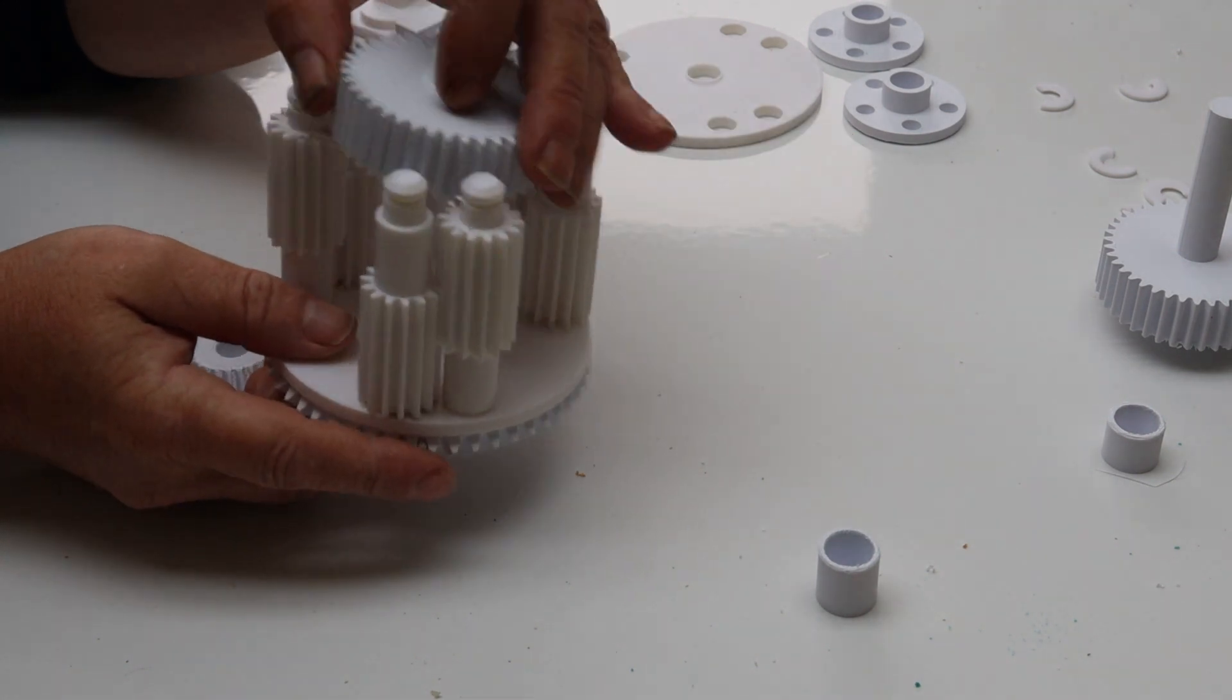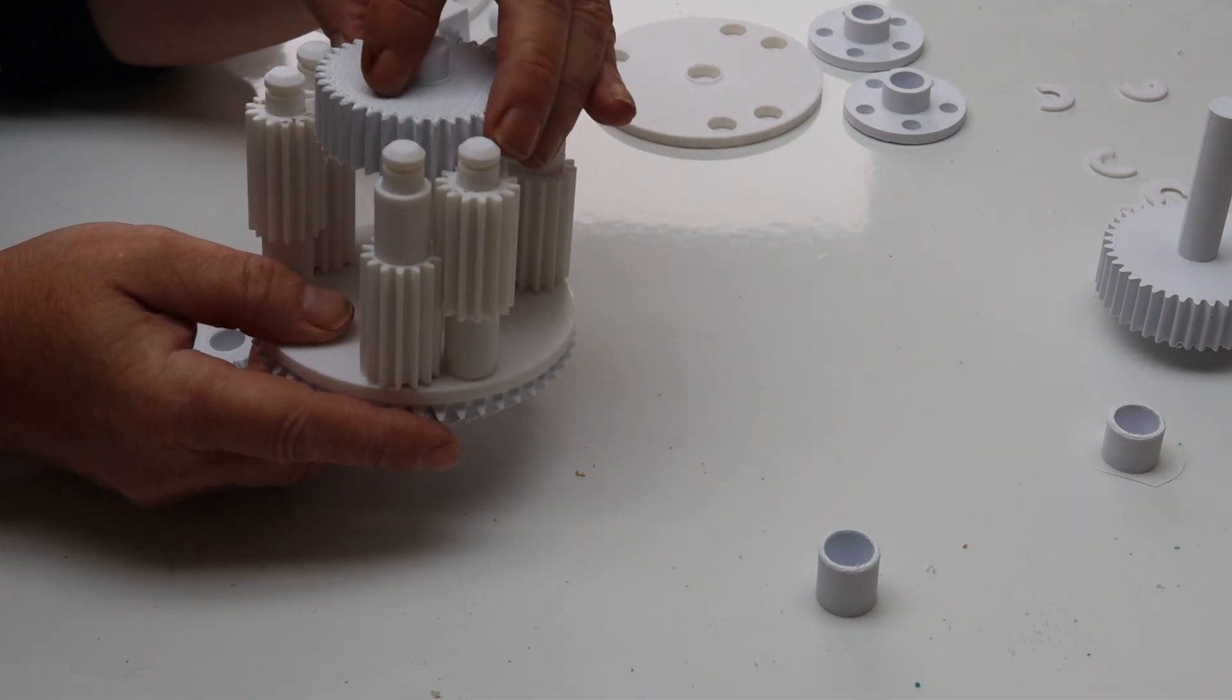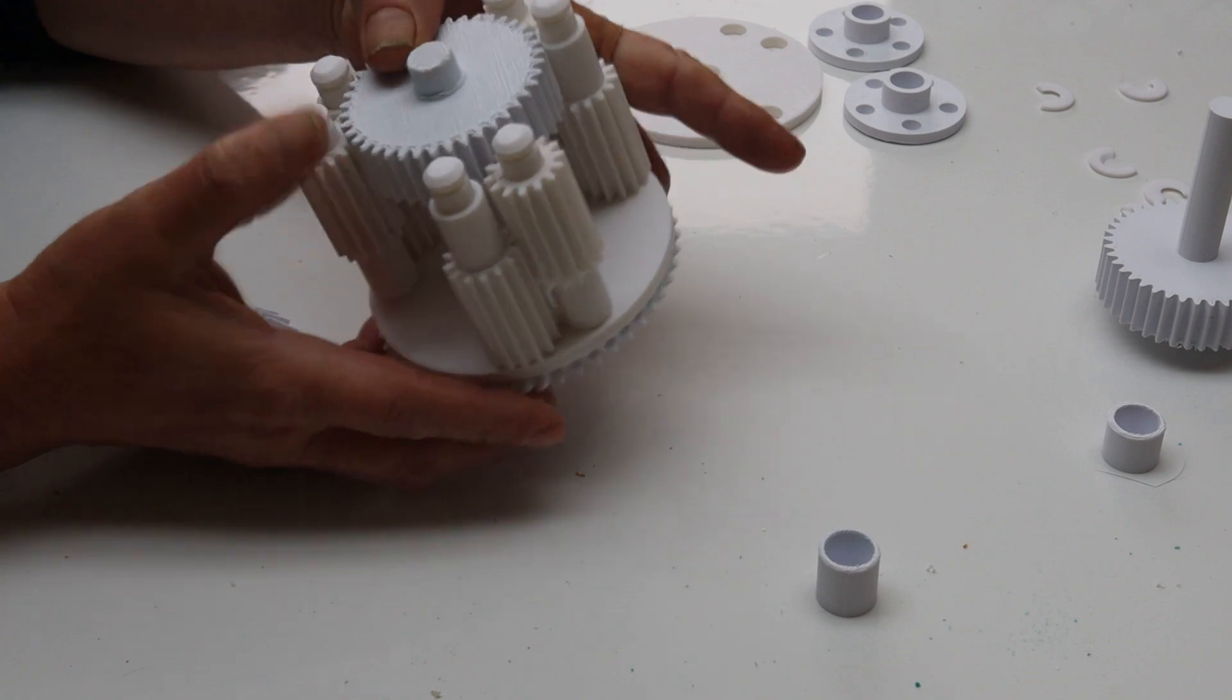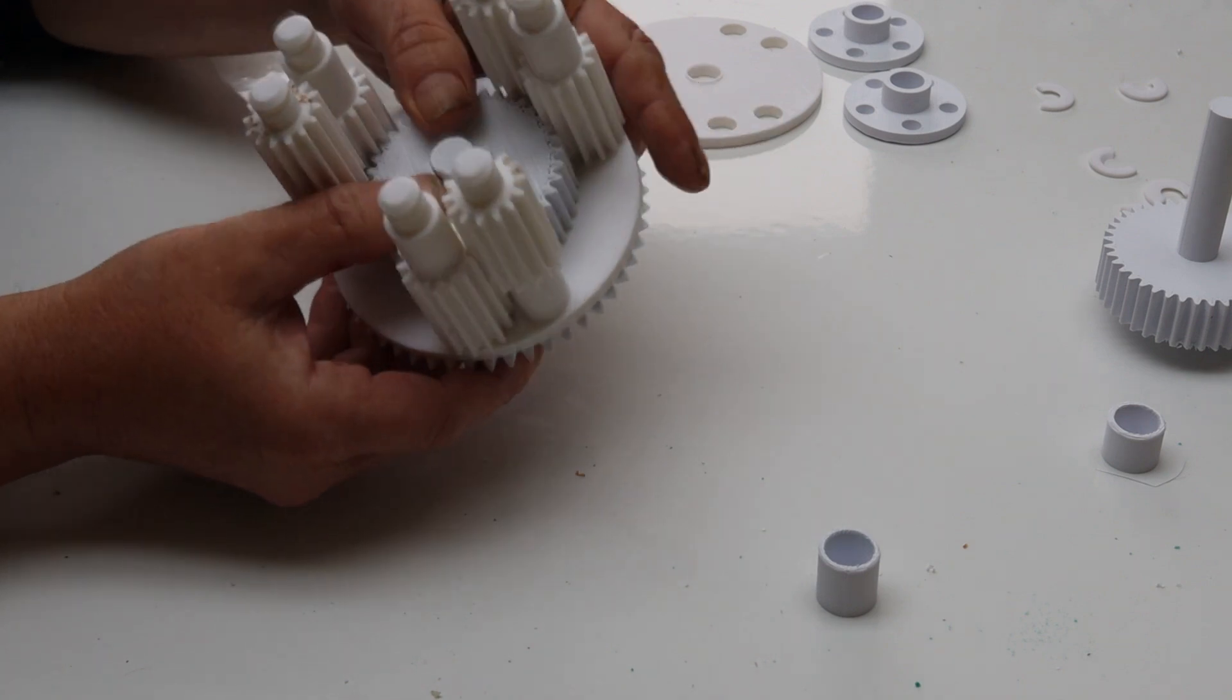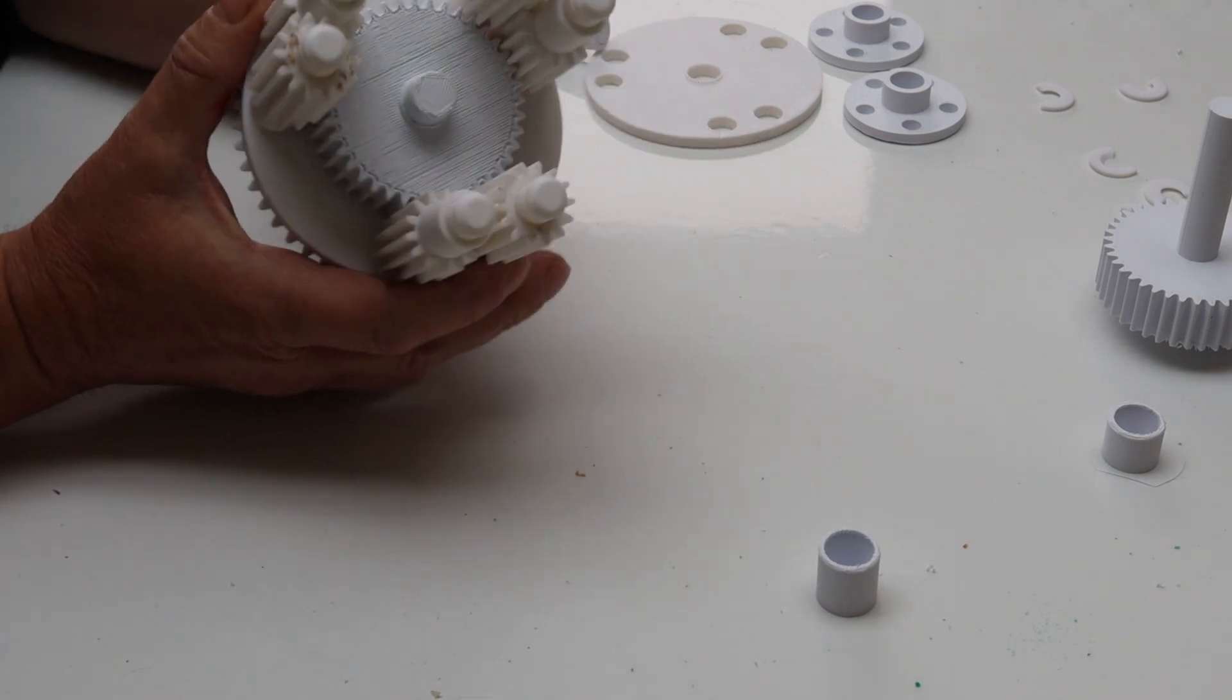Now we take one of the sun gears with the long axle pointing outwards, you feed it right the way through between those Spur gears that you've just added. And it should be free to spin.